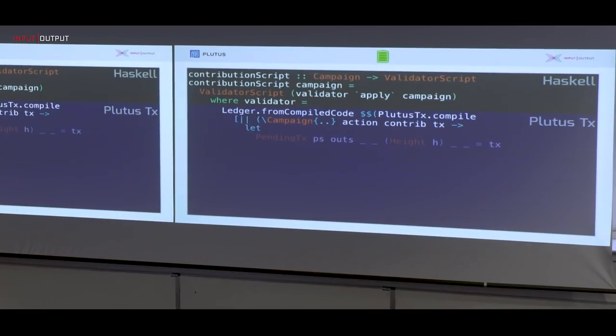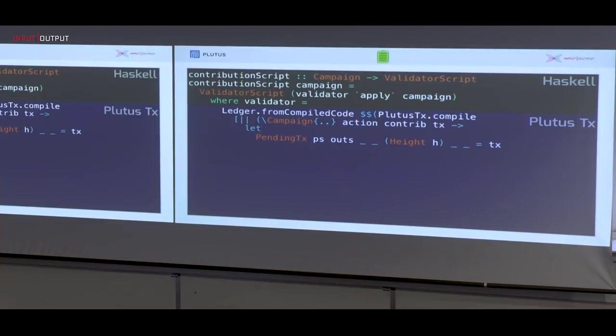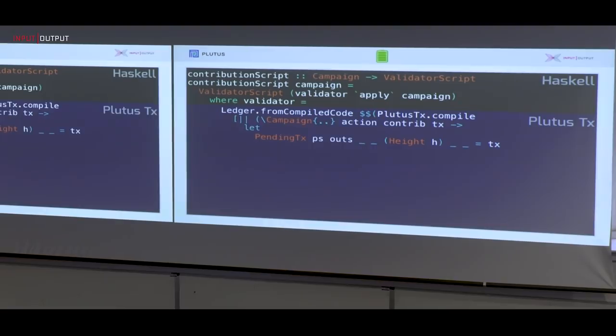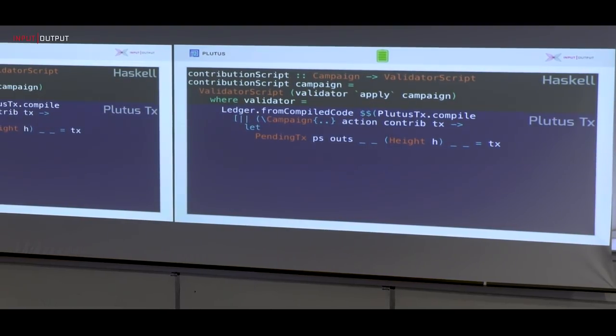What does the on-chain code do? First of all, it gets one argument called tx, which is transaction. And this is syntax for Haskell pattern matching, taking a complex value, splitting its multiple components. Because we have to get at the individual bits of the transaction to check it's okay. That's our job. We are the validator.